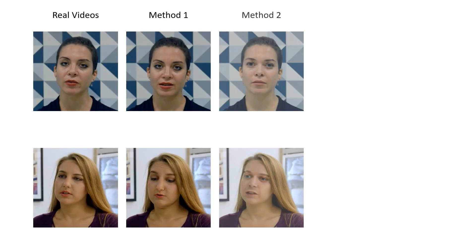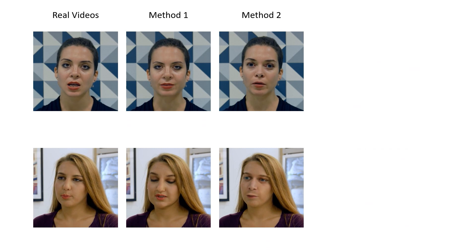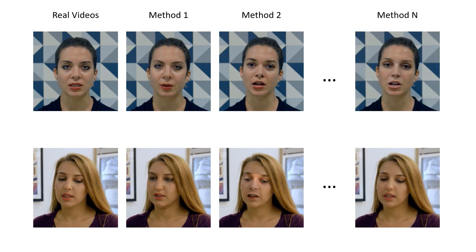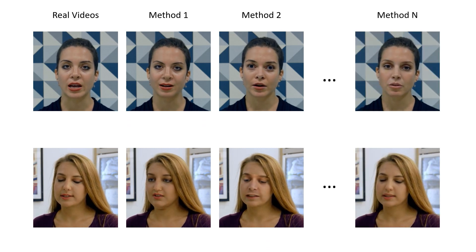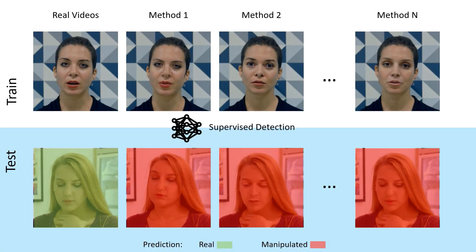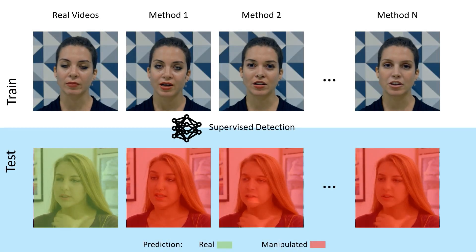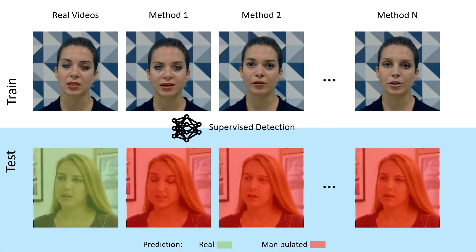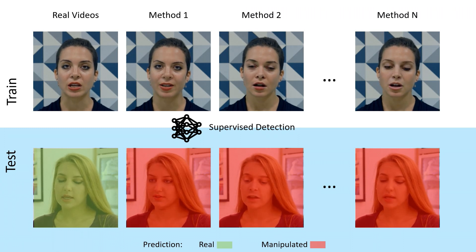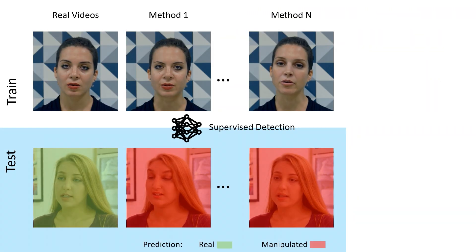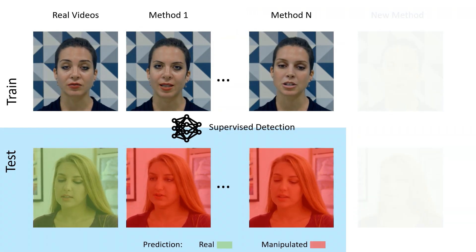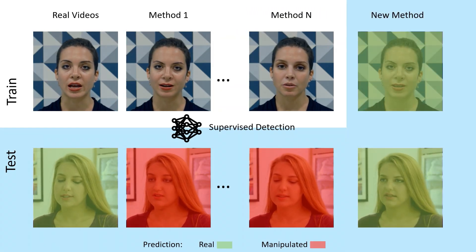Supervised methods need to train on large datasets and obtain good results on known manipulation techniques. However, they are not able to generalize and fail on unseen face manipulation methods.